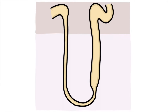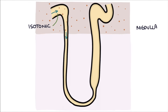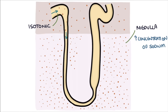As the filtrate enters the loop of Henle it's isotonic, meaning it has equal concentration of solutes between the blood and the filtrate. As it flows down the descending loop of Henle it enters the medulla, where the interstitial fluid has a high concentration of sodium and other solutes that have been pumped out of the ascending loop.